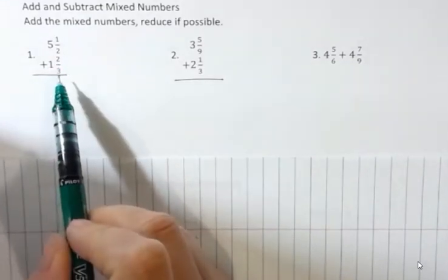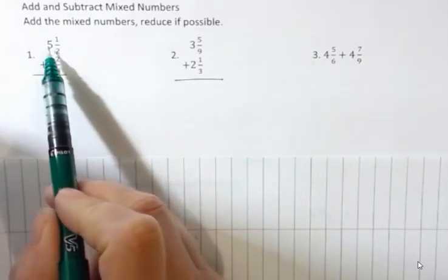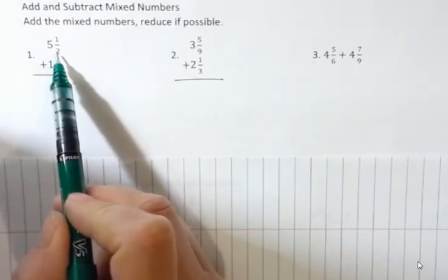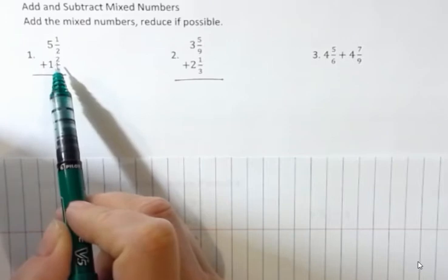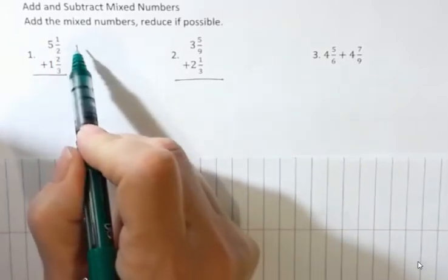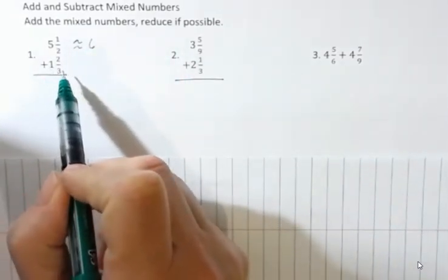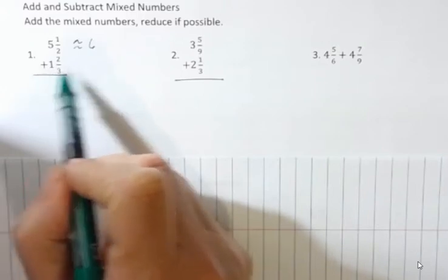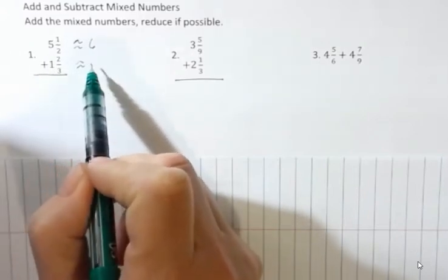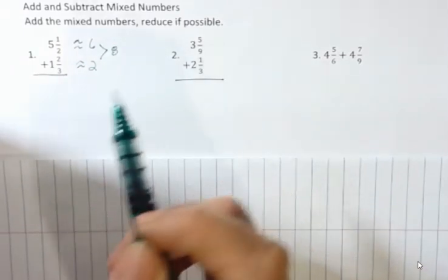What I want you to do first is think about estimating this problem. So five and a half, would we say it's closer to five or six? Well, if it's a half we go up. So that is approximately six. And what about one and two thirds? Two thirds is more than a half, so we would actually round up and that would be approximately two. And if we add those together we would have an estimation of eight.